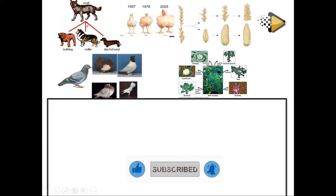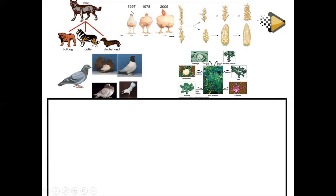With dogs, characteristics are identified and those dogs with desirable traits are bred so that after many generations you end up with those same characteristics. With chickens, you can see that in 1957 the chicken was like this, in 1978 it was like this, and in 2005 it's like this — showing that those which can produce large, high-quality meat are selected, while those which cannot are removed from the system. The same applies to maize and wheat.